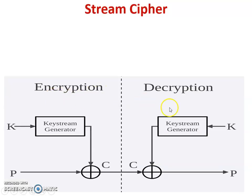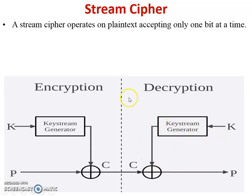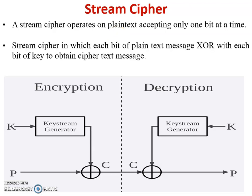Now, how can we encrypt and decrypt data in stream cipher? In this figure, the input of the XOR operation is the plain text and the key. Plain text and key are applied bit by bit and it generates cipher text. For decryption, the input changes to cipher text and key, and it generates plain text. Stream cipher operates on plain text accepting only one bit at a time, and each bit of plain text is XORed with each bit of the key to obtain the cipher text.